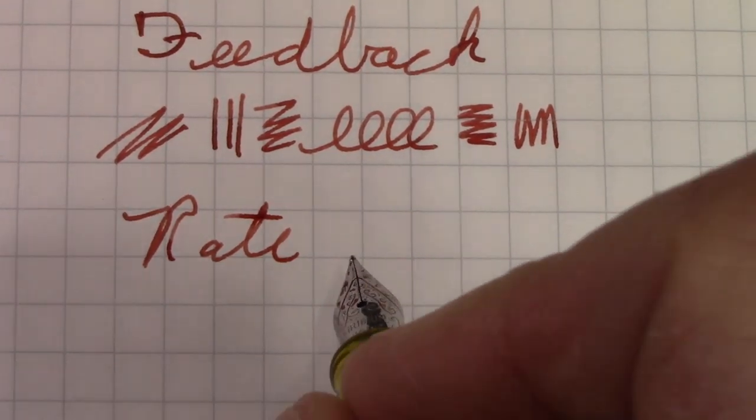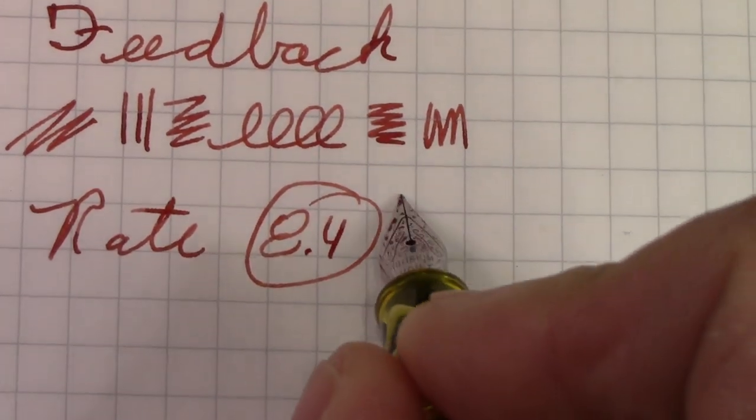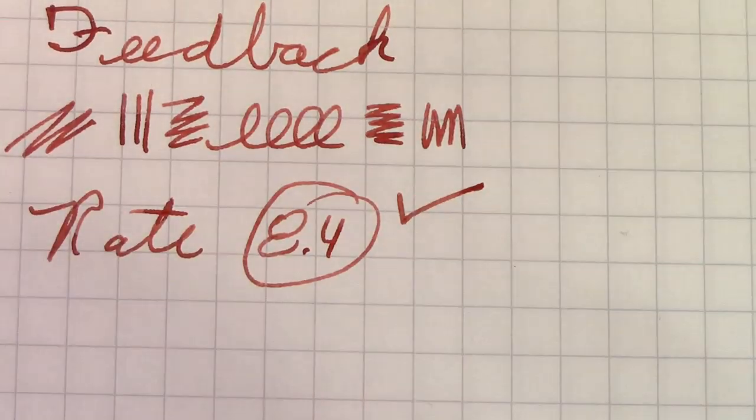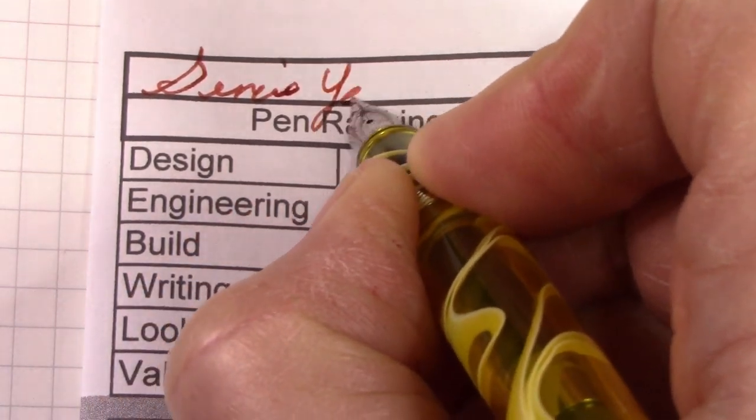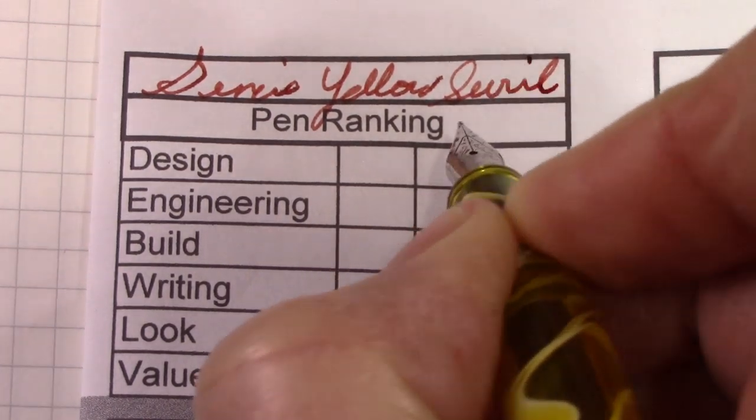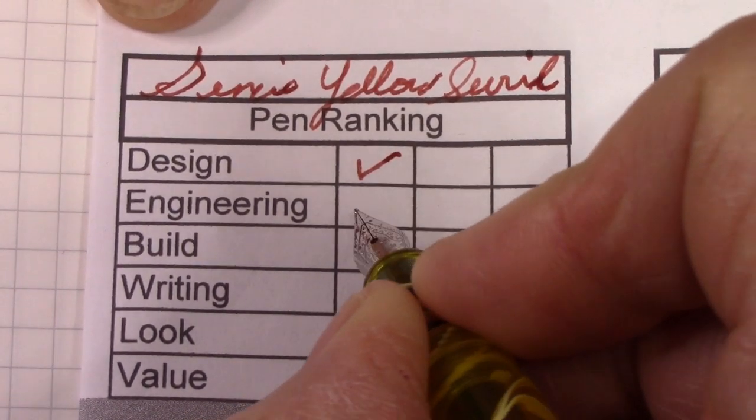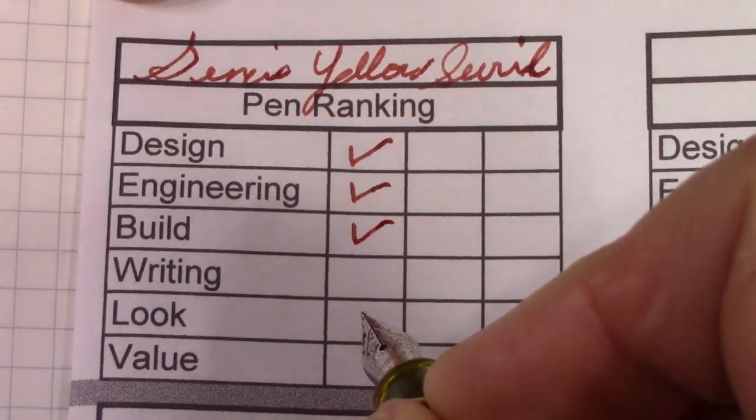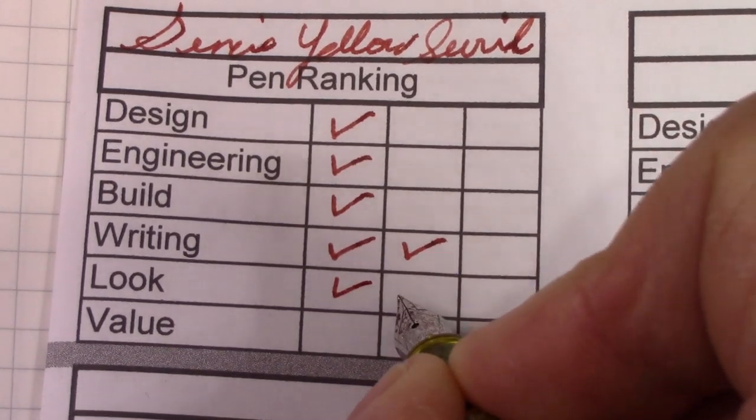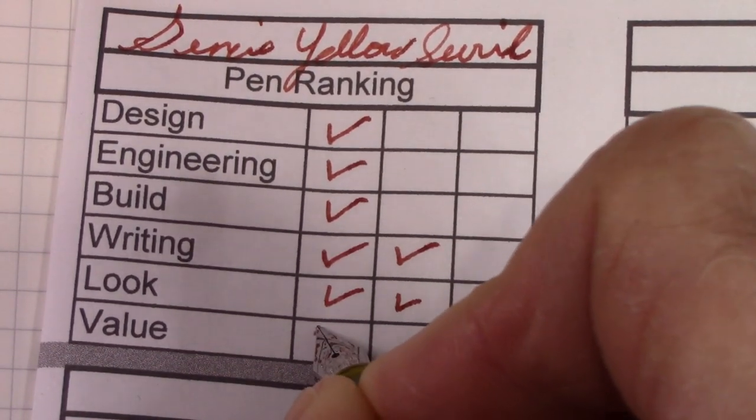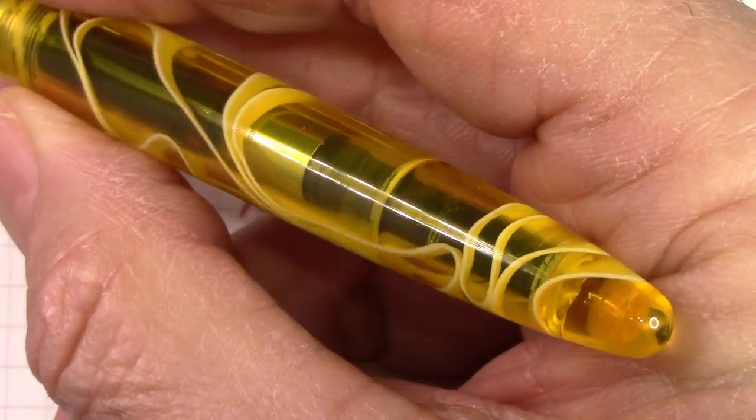And that's not an easy thing for me to do. I'm going to give it an 8.4, and it basically gets one check for the resin and the look. So let's go to the details. Design just gets one check, engineering gets one check, build gets one check. I'm going to give writing two checks. I'm trying to be objective about that. The look, we're going to give it three checks, and the value is one check. That's how we got to our 8.4.